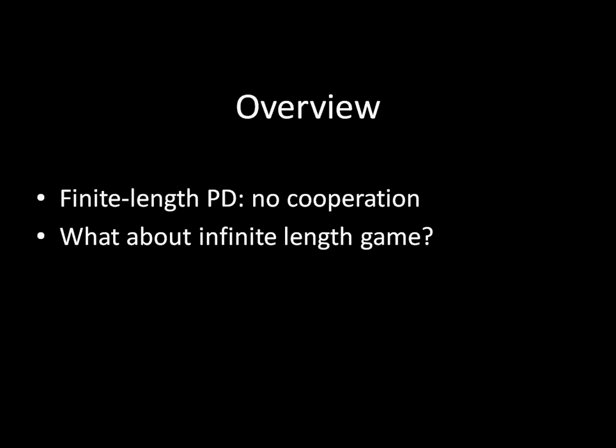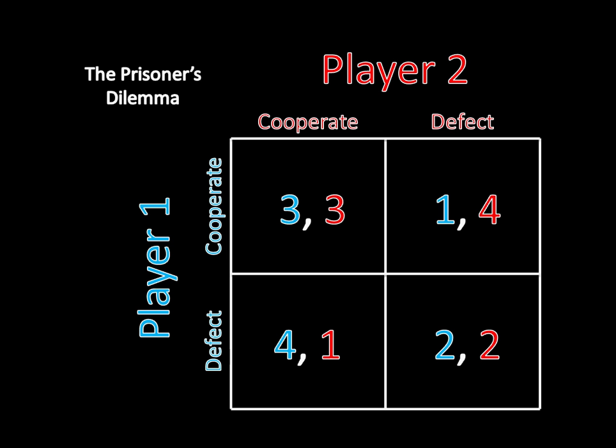That's a good question to ask and one we should answer, but we can't just jump into it immediately. There's a big problem here. Take a look at this payoff matrix. Imagine that you're player 1 and you're playing against player 2 in an infinite length game, repeating this prisoner's dilemma over and over again without end.